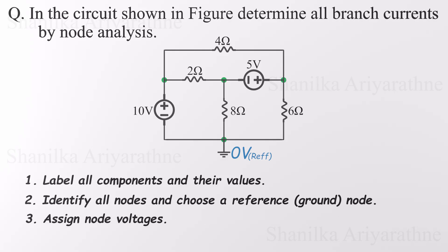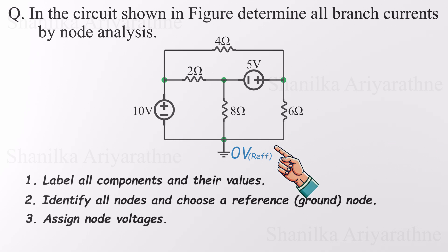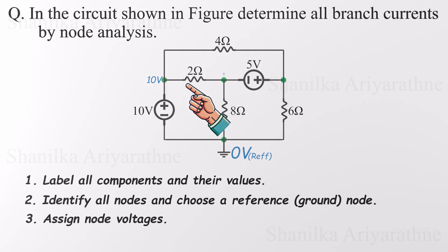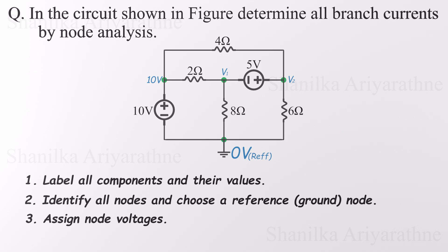Next up: assigning voltages to the other nodes. We always begin with any voltage sources directly connected to the reference node. In this circuit, a 10-volt source has its negative terminal connected directly to the reference node, so the positive terminal must be 10 volts higher than ground. For the remaining unknowns, we'll call them V1 and V2, representing the voltages at each node relative to ground.